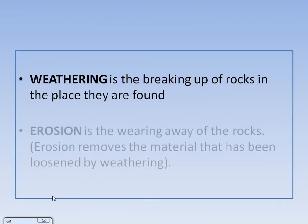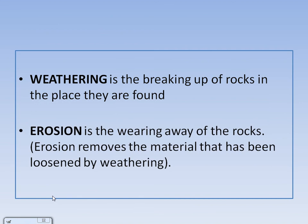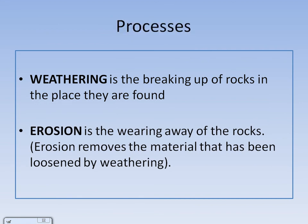There are two main processes that happen in the desert. Weathering is the breaking up of rocks in the place they are found. Erosion is the gradual wearing away of rocks.